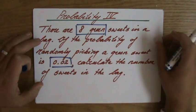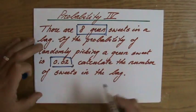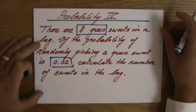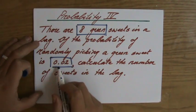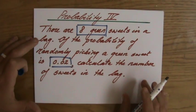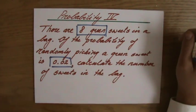Okay now there are several ways to solve this question. So the question is calculate the number of sweets in the bag, so the total number of sweets. Now first of all perhaps the easiest way I think is 0.02, what is that as a percentage? What is that as a percentage?